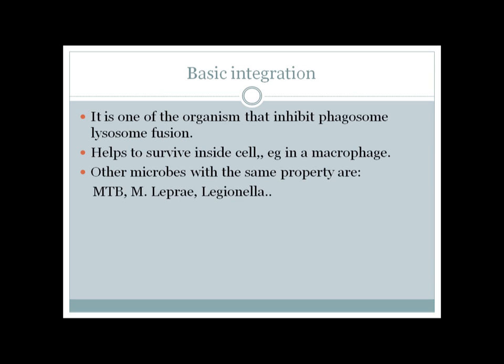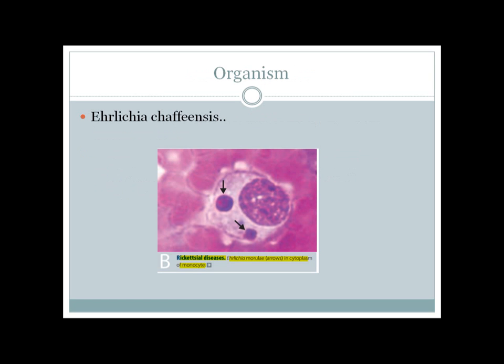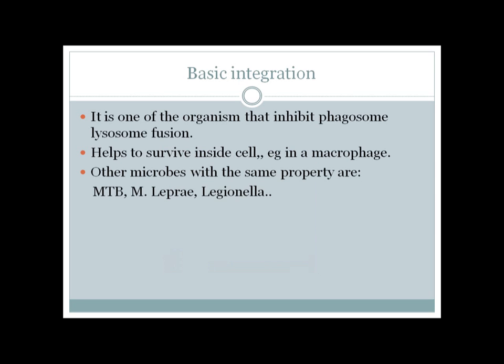Ehrlichia is one of the organisms that inhibit phagosome-lysosome fusion, which helps it survive in the cell. They actually form an inclusion that looks like a berry — this is the berry-like inclusion of Ehrlichia inside the monocyte. Other organisms in this group include Mycobacterium tuberculosis and Mycobacterium leprae, the causative organism of leprosy.